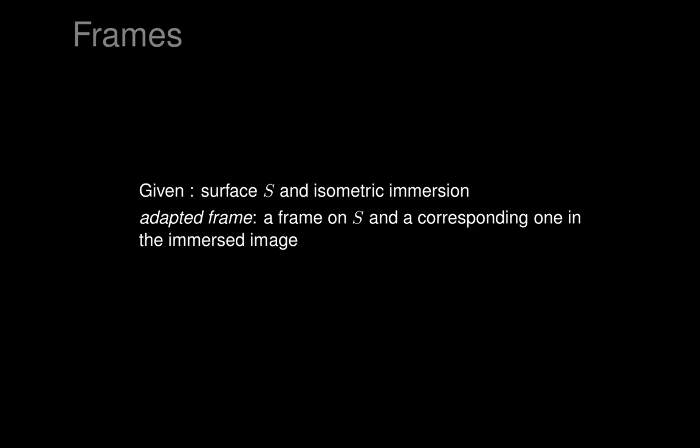An adapted frame for an isometric immersion means a frame — an orthonormal frame on S and a corresponding one in the immersed image. So we've got both an E1, E2, E3 frame on S with E3 normal, and we've got an E1 prime, E2 prime, E3 prime frame on the isometric immersion image, with E3 prime perpendicular to the image tangent plane.